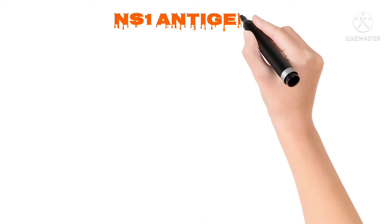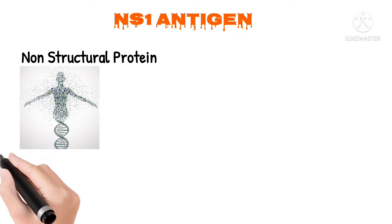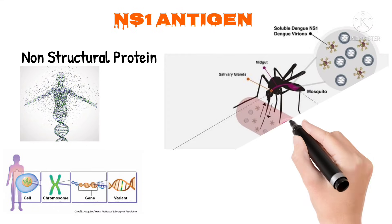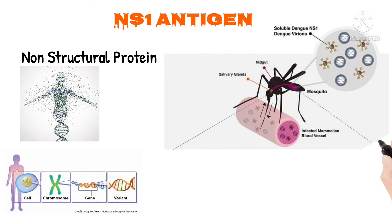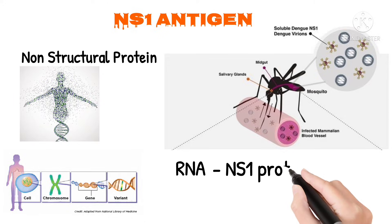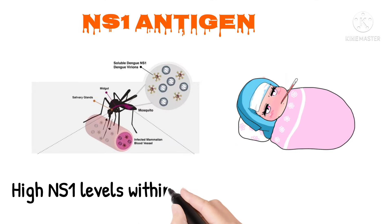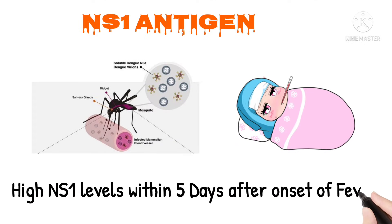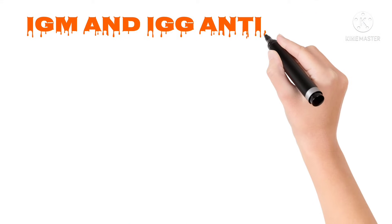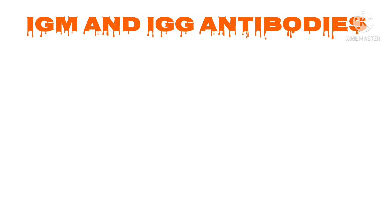NS1 is nothing but non-structural protein. As we know humans contain a gene called DNA, similarly the Aedes mosquito contains a gene called RNA. Within this RNA there is a protein called NS1, and NS1 levels will be very high within five days of onset of fever. Next we will look at IgG and IgM.